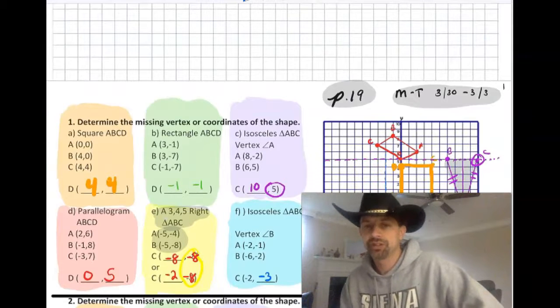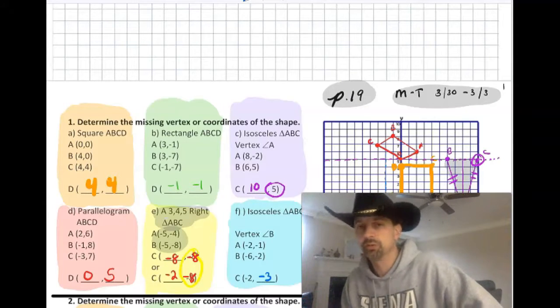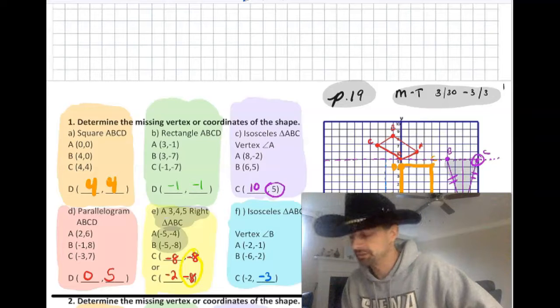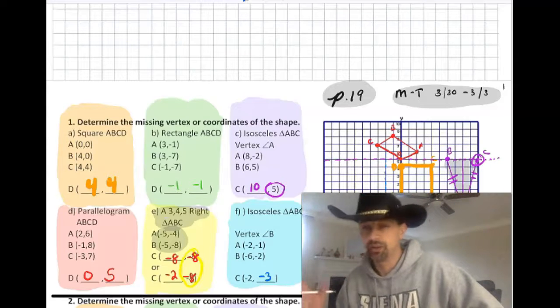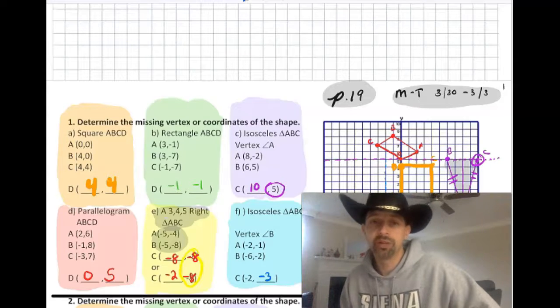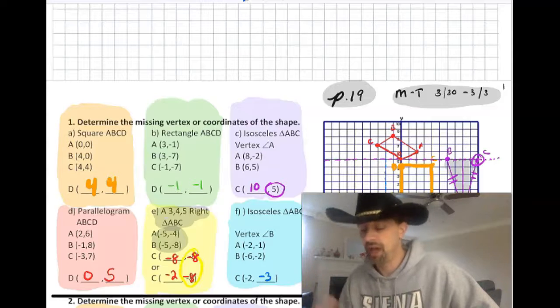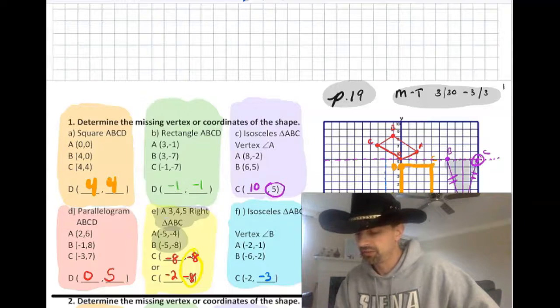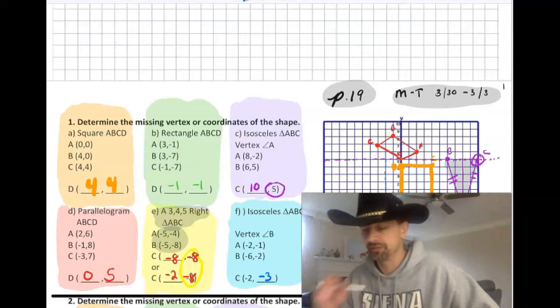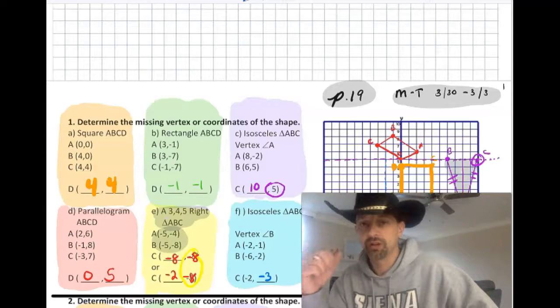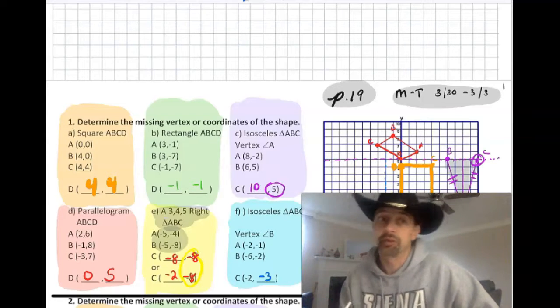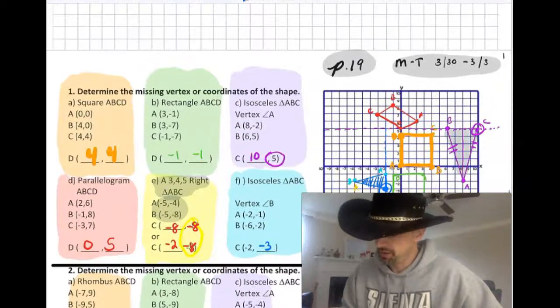So this is actually the beginning of coordinate proofs and past regions exams. You're not getting at whether we're going to have one or when it will be or how much it will count. But in past exams, this was the beginning of a coordinate proof problem. A lot of times was to find the fourth point of a quadrilateral or maybe even the third point of a certain triangle.